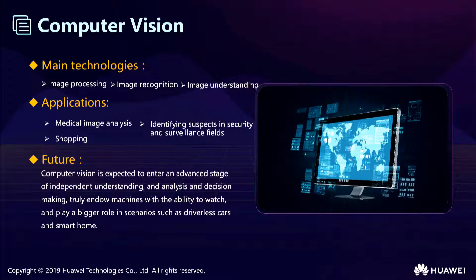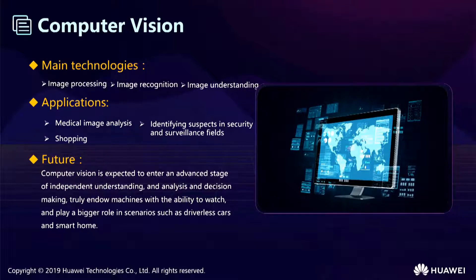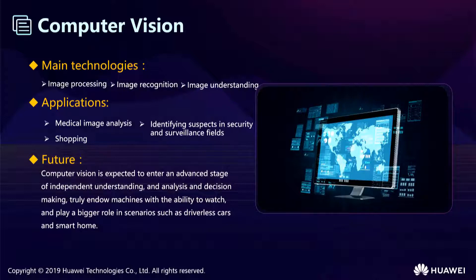Computer vision deals with how computers can be made to identify objects, things, and activities from images — including image processing, recognition, detection, analysis, and understanding. Let's see some computer vision applications. Medical image analysis is used to facilitate disease prediction, diagnosis, and treatment. Identifying suspects in security and surveillance fields. Shoppers can take photos of products with smartphones to find or browse product information. Computer vision is a factor in entering an advanced stage of independent understanding, analysis, and decision-making, truly endowing machines with the ability to observe and play a big role in scenarios such as driverless cars and smartphones.